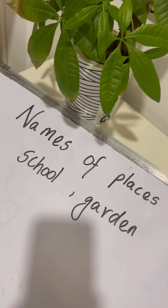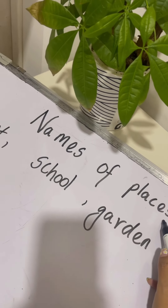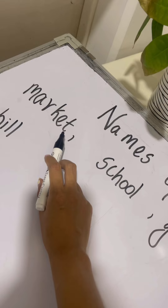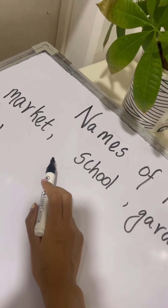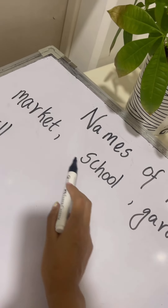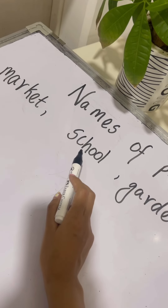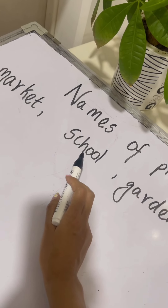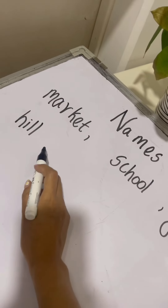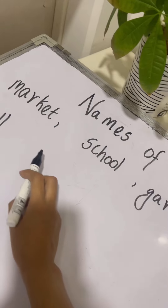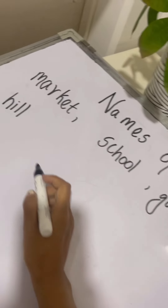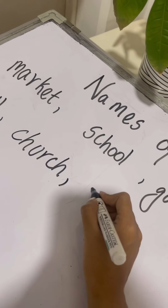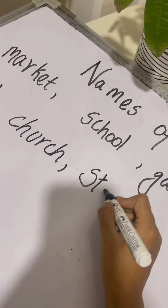Now, let us take a look at the names of places. You go to the market to buy vegetables, isn't it? So, market is the name of a place. School — you go to school to study, so school is the name of a place. Garden, hill. Can anyone tell me more names of places? Church. Can you tell me more? Street. Very good.